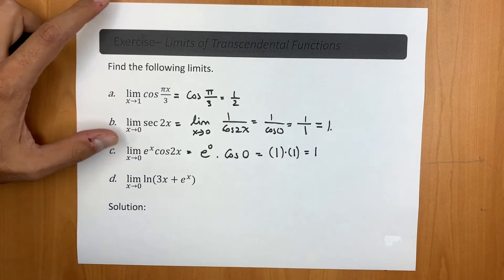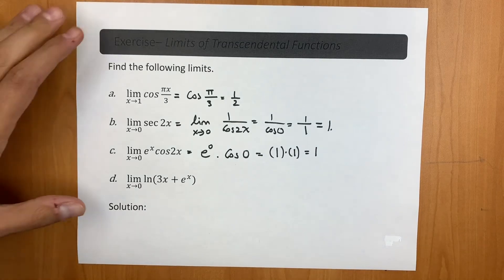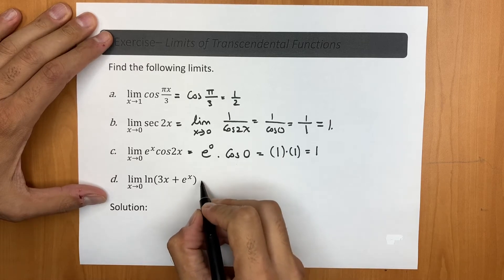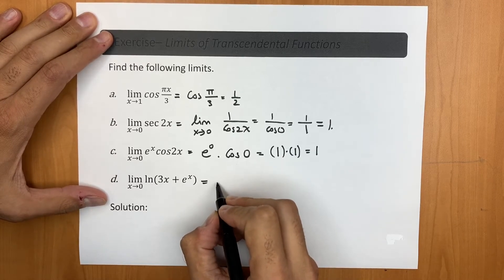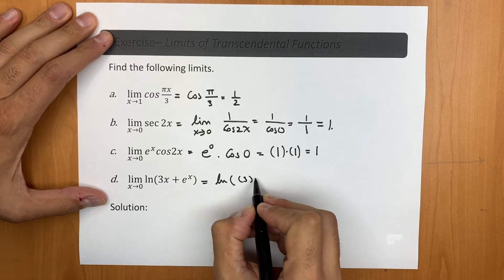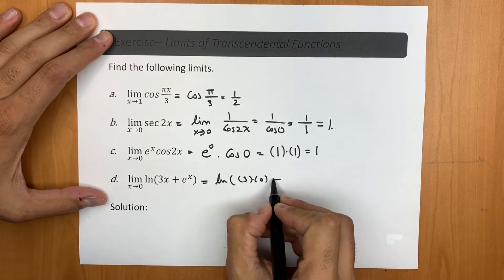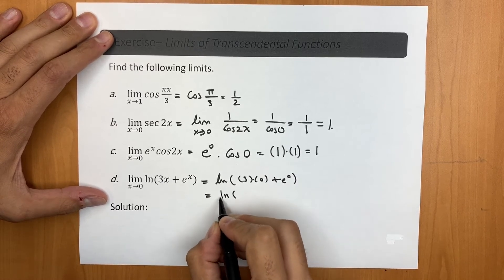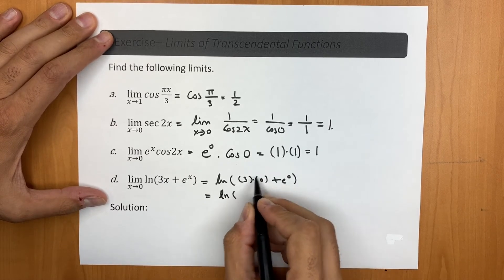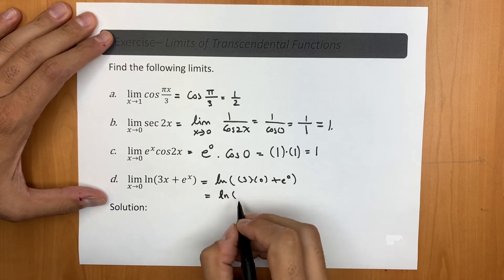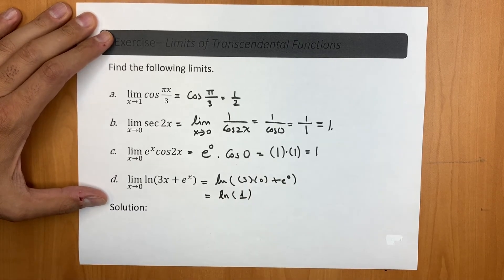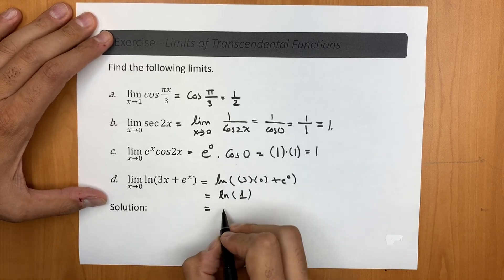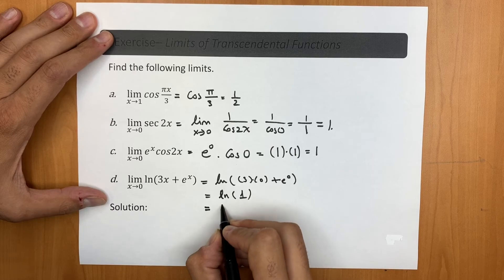Finally, we have the limit of the natural logarithmic function ln(3x + e^x) as x approaches 0. Substituting 0 gives ln(3·0 + e^0), which equals ln(0 + 1), and since e^0 equals 1 by definition, this is ln(1). By definition of the natural logarithm, ln(1) equals 0.